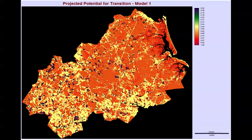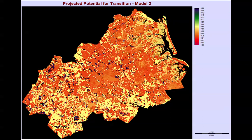This map represents the soft output of our first model using only 1971 land use. Redder values indicate higher projected potential for any transition to occur. And this map represents the soft output for our second model, where we added elevation, surficial geology, and distance from built in 1971. Again, values that are more red indicate higher projected potential for any transition to occur between land covers.